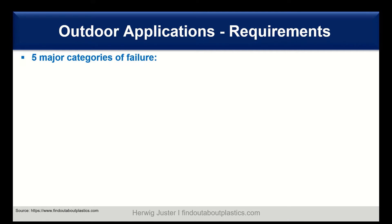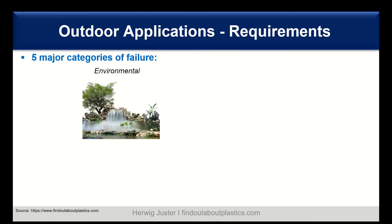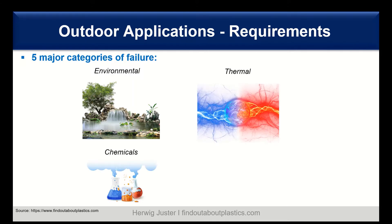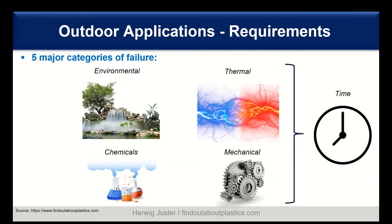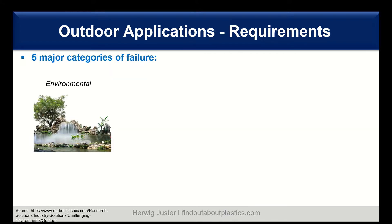An important point for outdoor applications are the requirements, and when you think in terms of plastic part failure, there are five major categories you can trace back the failure mechanism to. We have environmental impact, thermal impact, chemicals, and mechanical, as well as time, which is overarching all these four elements. For outdoor applications, we have a special look at the environmental point.